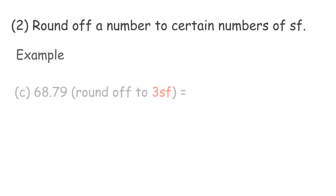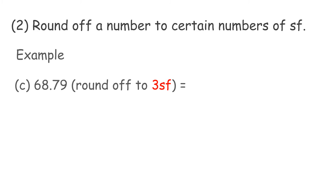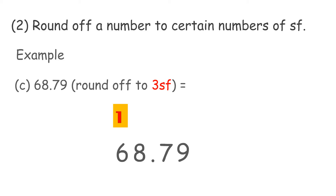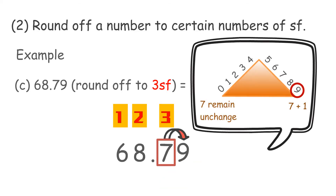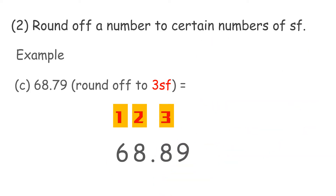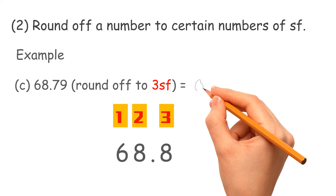Example C: round off 68.79 to 3 significant figures. Count 1, 2, 3 — the digit to be rounded off is 7. Look at the right-hand side digit of 7. It is 9; since 9 is greater than 5, so add 1 to 7 and take out the 9. Therefore, the answer is 68.8.